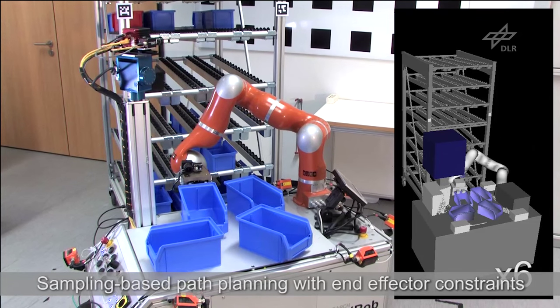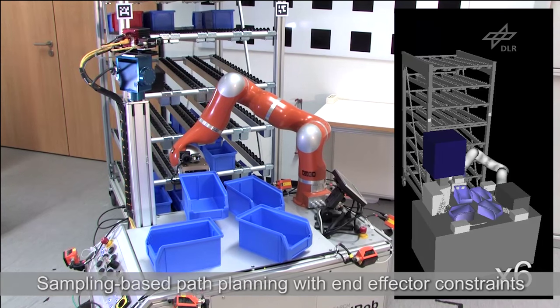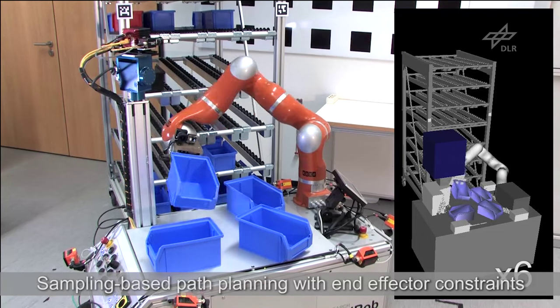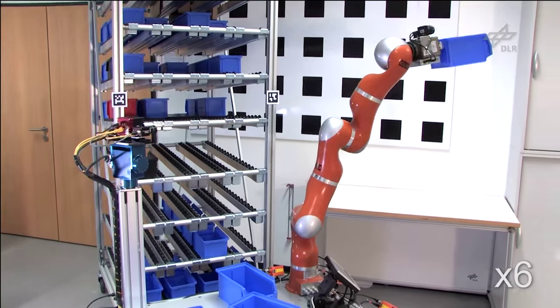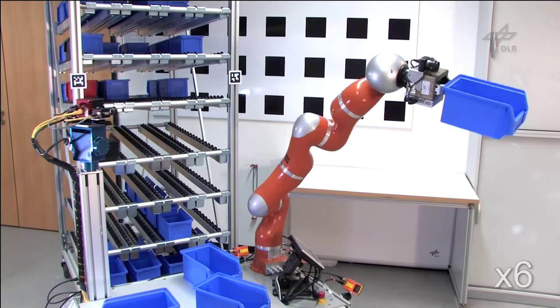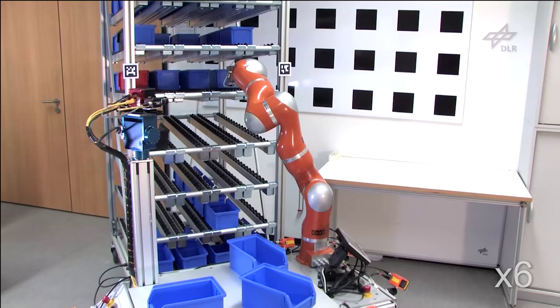A sampling-based path planner is used to find a collision-free path to a pre-grasp position utilizing the generated environment model. In order to ensure an upright position, pose constraints for the grasped small-load carrier are enforced during planning.